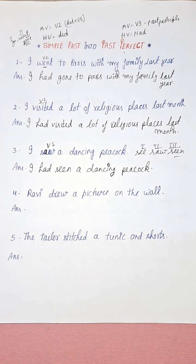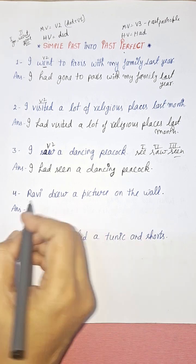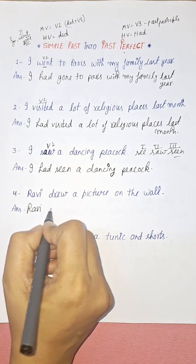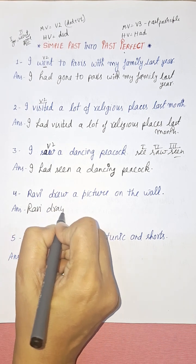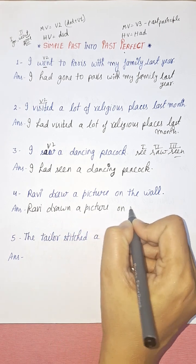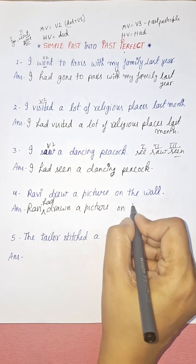The next sentence: 'Ravi drew a picture on the wall.' These are all simple or affirmative sentences — we will discuss interrogative and negative sentences in the next video. The forms are draw, drew, drawn. Converting to past perfect: 'Ravi had drawn a picture on the wall.'